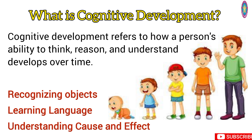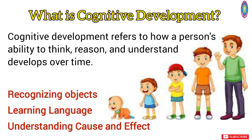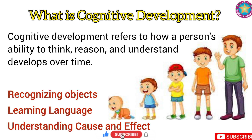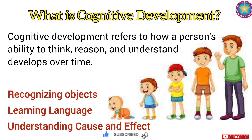Jean Piaget, a well-known psychologist, suggested that cognitive development happens in stages. This development is influenced by both nature and nurture, meaning that while genetics play a role, experiences and education are equally important.